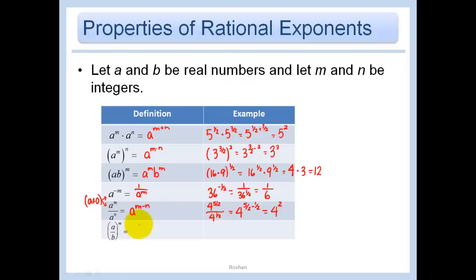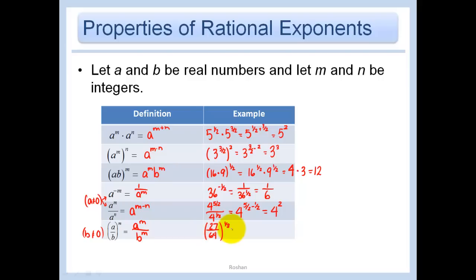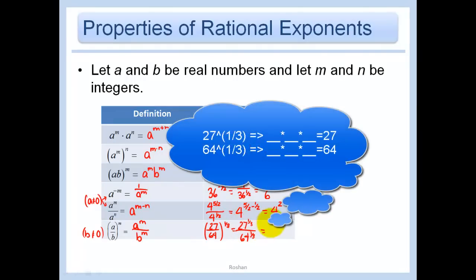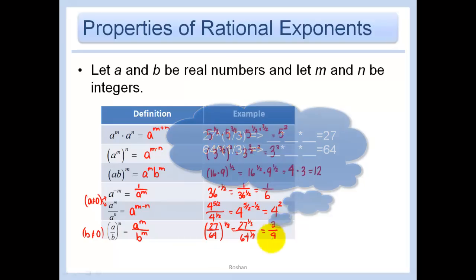a over b to the m power is a to the m over b to the m — b does not equal 0. For example, 27 over 64 to the 1 third power: I try to reduce first but can't, so I do 27 to the 1 third over 64 to the 1 third. What times what times what is 27? I get 3. What times what times what is 64? I get 4. And that is my final answer.